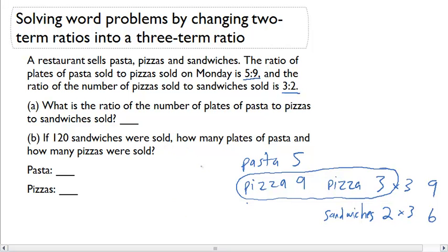This will allow me to write my new ratio of pasta 5, to pizza 9, to sandwiches 6. So I have 5:9:6.